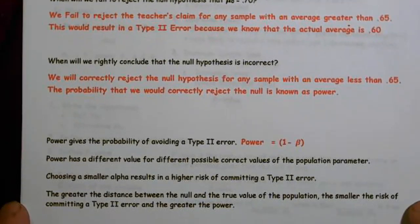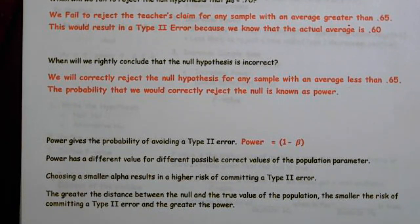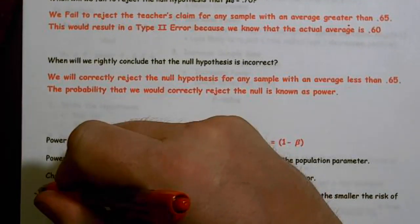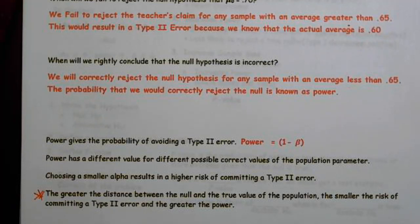Please note, power has a different value for different possible correct values of the population parameter. Choosing a smaller alpha results in higher risk of committing type 2 error. Put a huge big star by this: The greater the distance between the null and the true value of the population, the smaller the risk of committing a type 2 error and the greater the power.